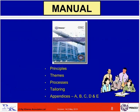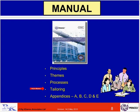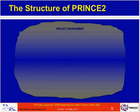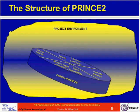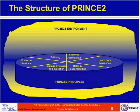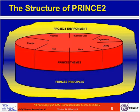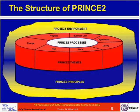PRINCE2 is based on seven key principles. These principles are supported by seven themes, and the project is then delivered through seven processes. The key element to all of this is tailoring, because we need to tailor the method to the environment we are working in and to the size of the project. These are identified as the four integrated elements. The structure of PRINCE2 is seven key principles, supported by seven themes, and delivered by seven processes.